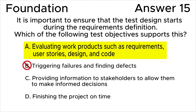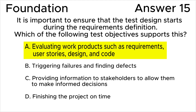Answer B is wrong because triggering failures and finding defects relates to test performing — it happens when the code has already been written, not at the test design stage. Answer C is wrong because providing information to stakeholders to allow them to make informed decisions relates to the last period of the test process: the test completion stage.